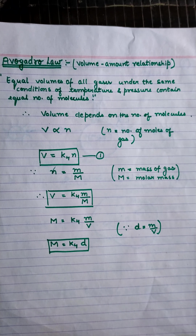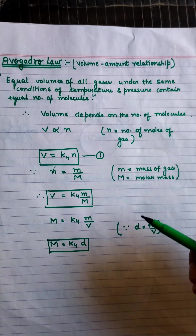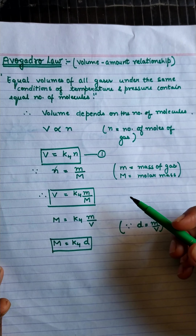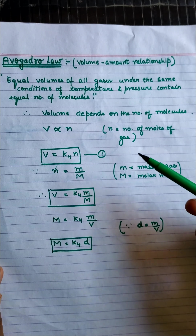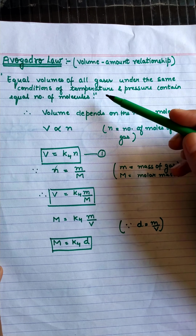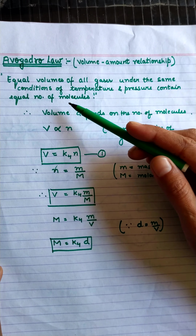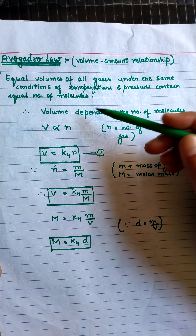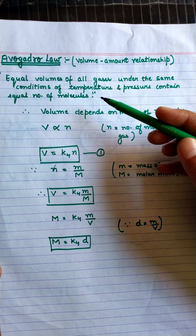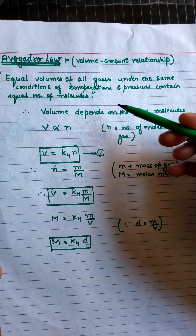Avogadro's law was given by scientist Avogadro. He tried to combine the conclusions from Dalton's atomic theory and Gay-Lussac's law to give his own law. According to Avogadro's law, equal volumes of all gases under the same conditions of temperature and pressure contain equal numbers of molecules.